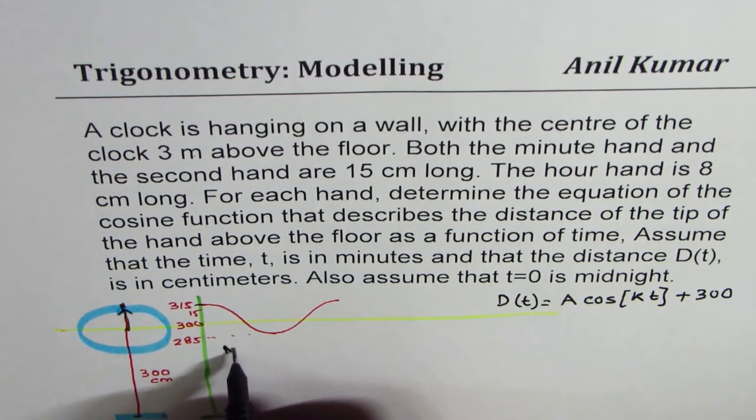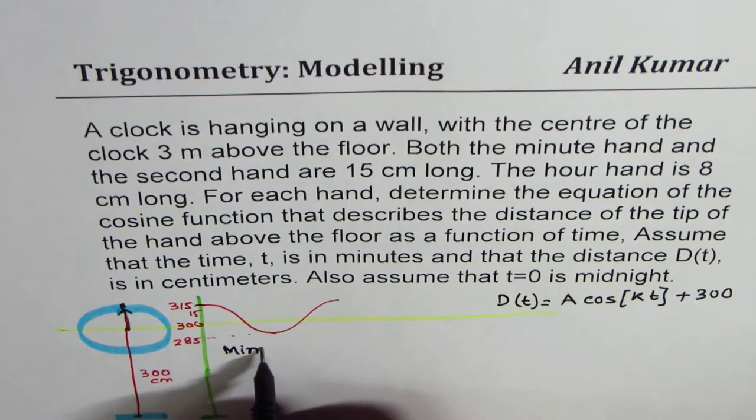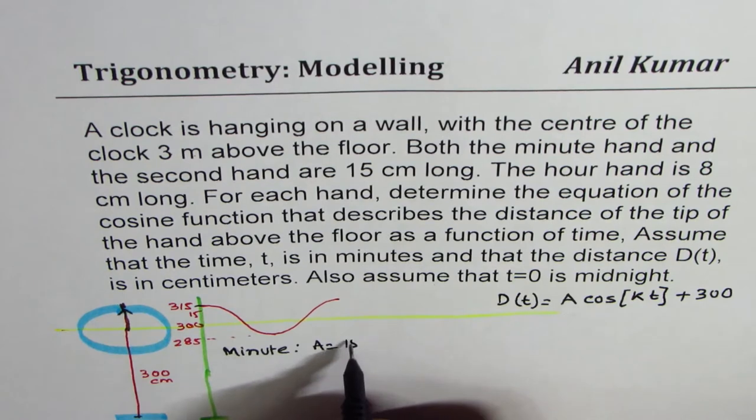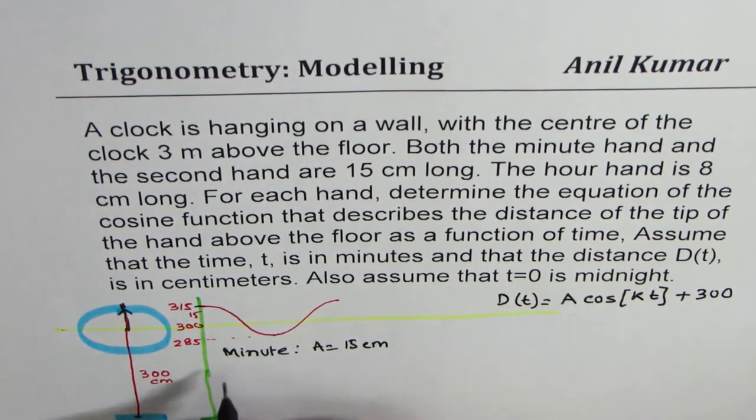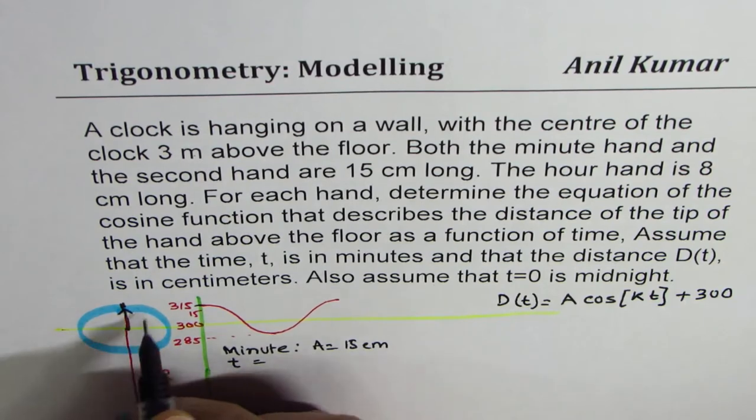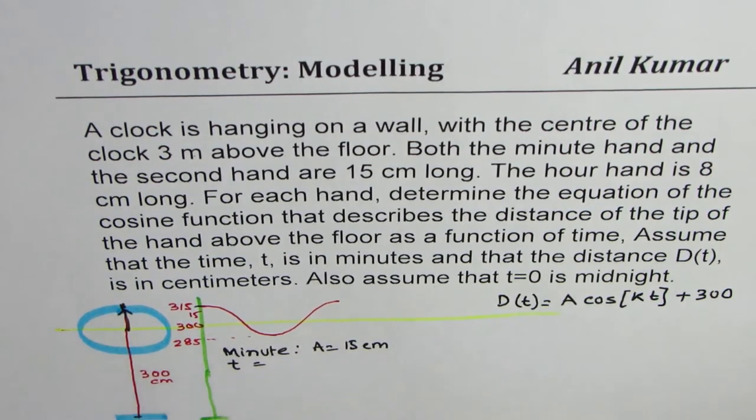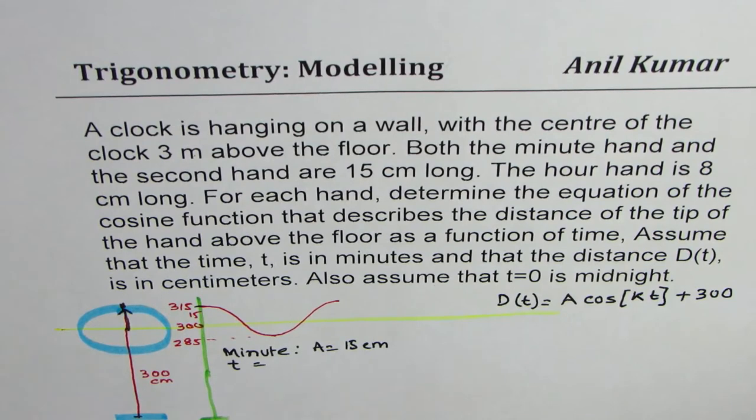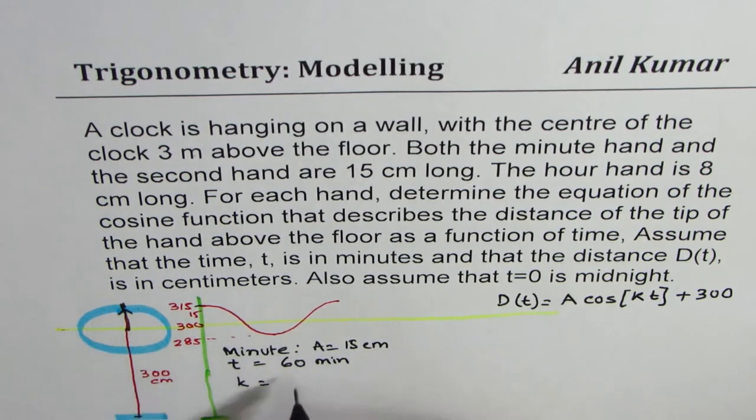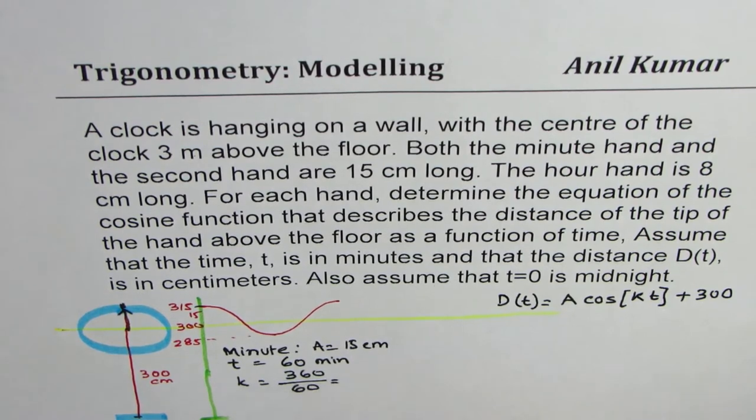So when we are talking about the minute hand, we know amplitude is length of the needle, which is 15 centimeters. And time taken for one full circle will be how many minutes? 60 minutes. So t is 60 minutes. k value will be one full circle is 360 divided by 60.